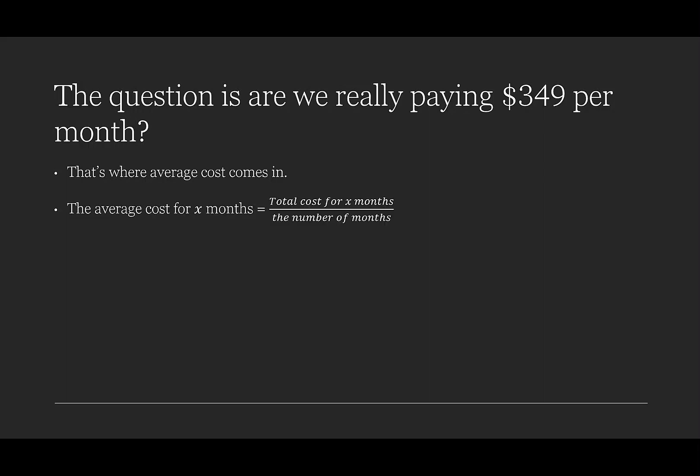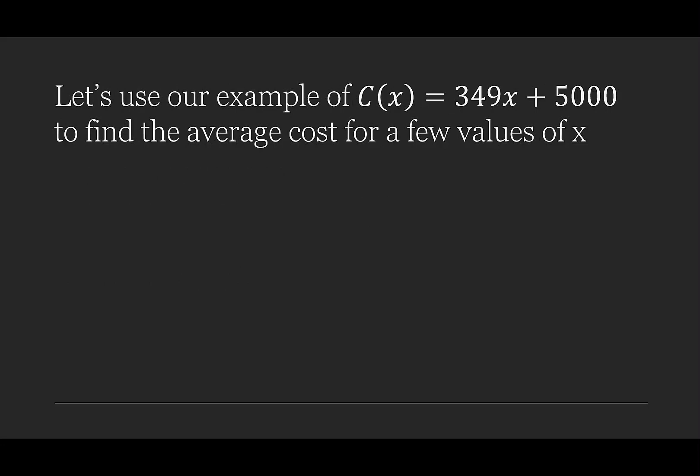The average cost for x months is the total cost for x months divided by the number of months. We can write this as C bar of x is C of x over x. Let's use our example of C of x is 349x plus 5,000 to find the average cost for a few values of x.